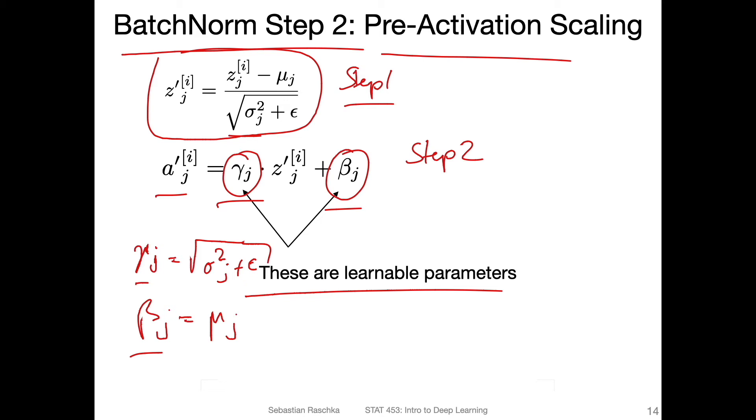Whether it does that or not really depends. But I'm just saying the possibility exists that it can undo this. But in that way, what's happening here is it's something that is a little bit more flexible than just regular standardization. Step one would be regular standardization of the hidden layer activations, and step two is a little bit more flexible.